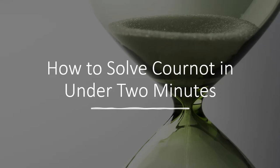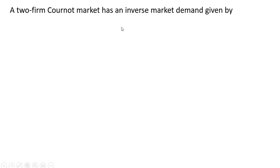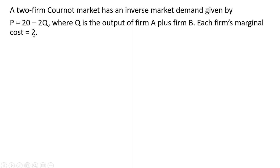How to solve Cournot in under two minutes. A two-firm Cournot market has an inverse market demand given by price equals 20 minus 2Q, where Q is the output of Firm A plus the output of Firm B. Each firm's marginal cost is constant at $2.